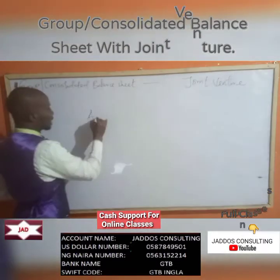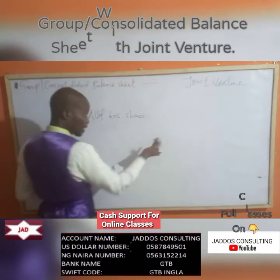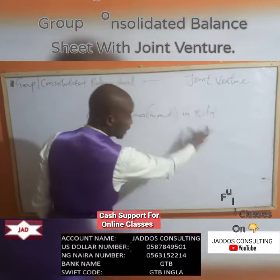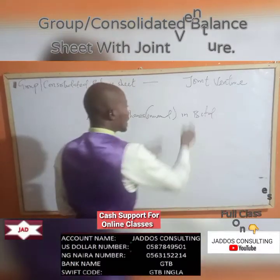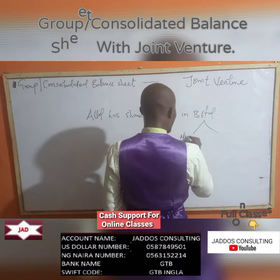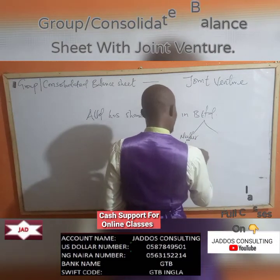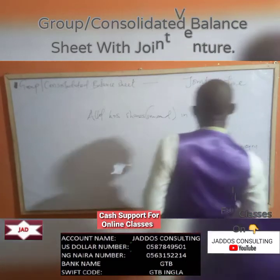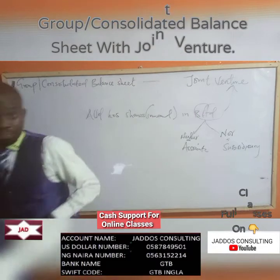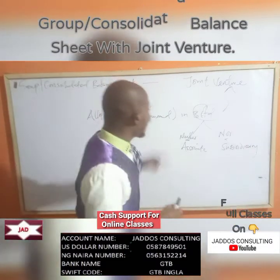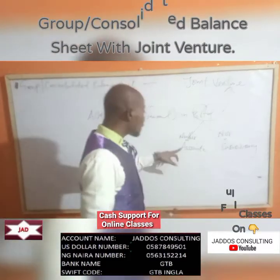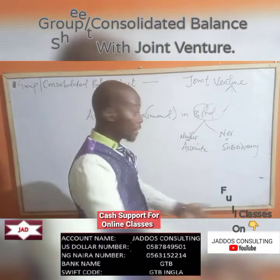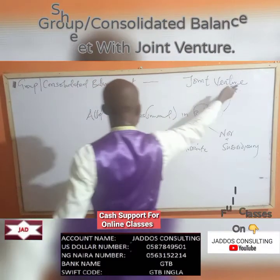For example, A Limited has shares — an investment — in B Limited. Now, we must be able to establish that the investment in a particular company is making that company not to be an associate and not to be a subsidiary. Once you can establish that the company in which there is an investment is not an associate and not a subsidiary, then it could be a joint venture.